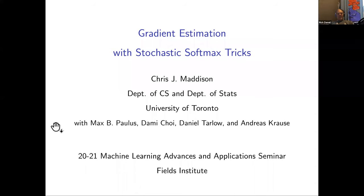He did his undergrad and master's work at U of T and then went across the pond and did his PhD at Oxford. We were very happy to lure him back recently — he joined U of T and Vector this past academic year, starting up in September 2020. Chris has done great research in optimization, probability, and statistics, sampling work, and applications like AlphaGo and code generation, and in general lots of interesting work on so-called structured learning problems. We're very happy to have Chris joining us today for his talk.